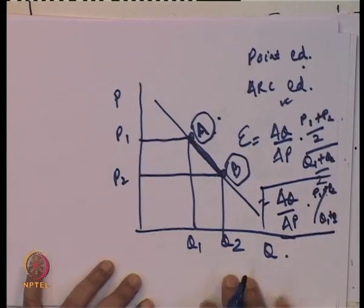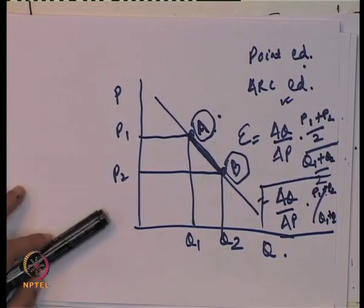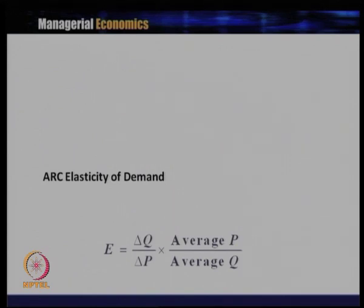This is the case when you calculate arc elasticity of demand — that is, elasticity between two points. As shown in the slide, arc elasticity is ΔQ/ΔP multiplied by the average of P and Q: average price between two points divided by average quantity between those two points in the segment where you are measuring arc elasticity.